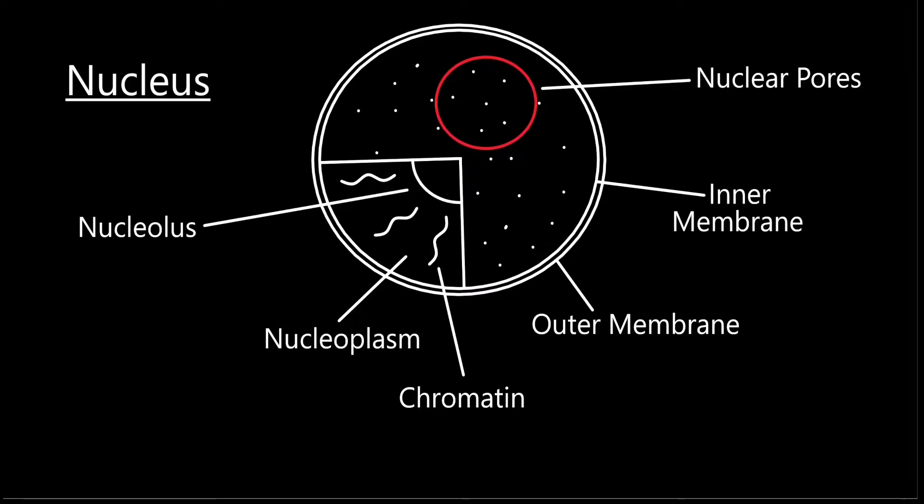The nucleus consists of six main parts: the nucleolus, the nucleoplasm, the chromatin, the outer membrane, the inner membrane, which make up the envelope, and the nuclear pores.